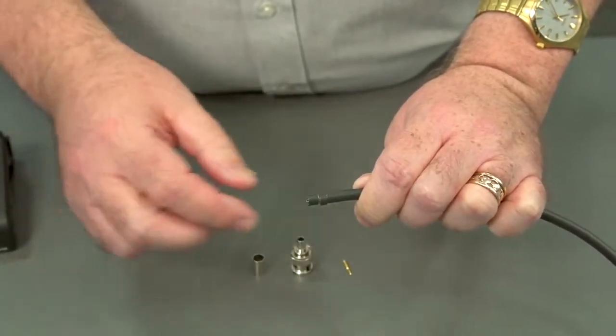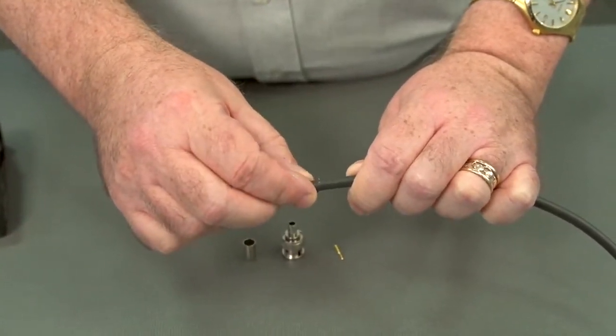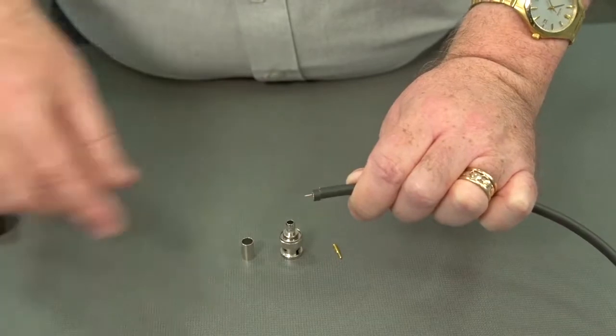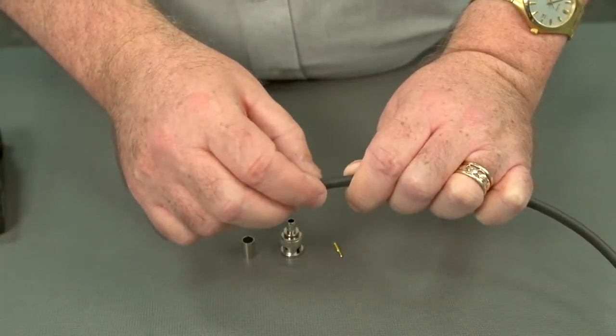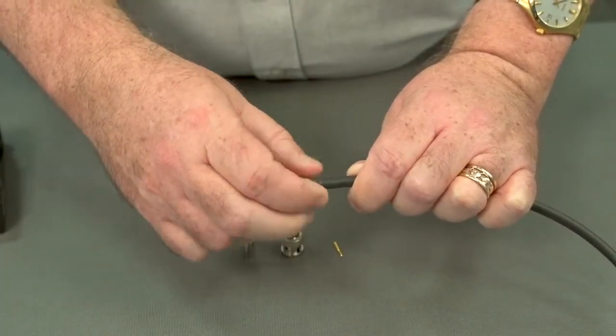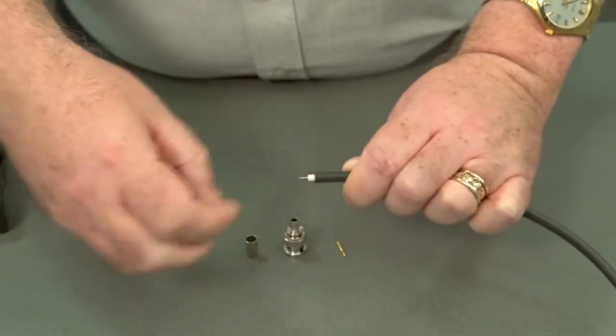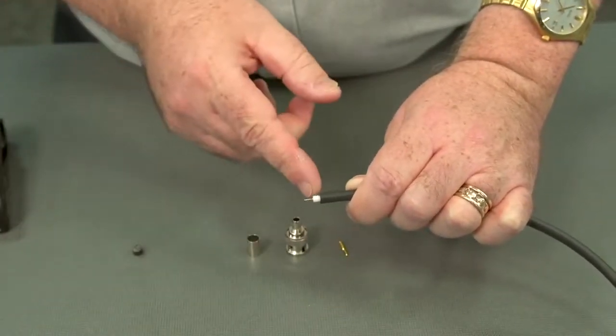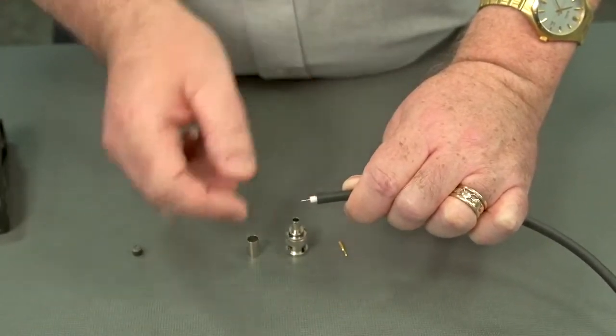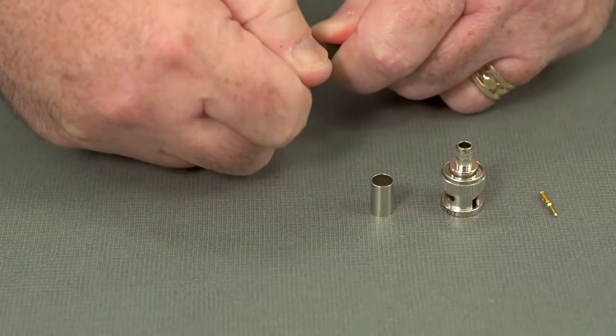Now let's look at our parts. This is coax. We have our center conductor, some of the white dielectric, and then under this third cut.